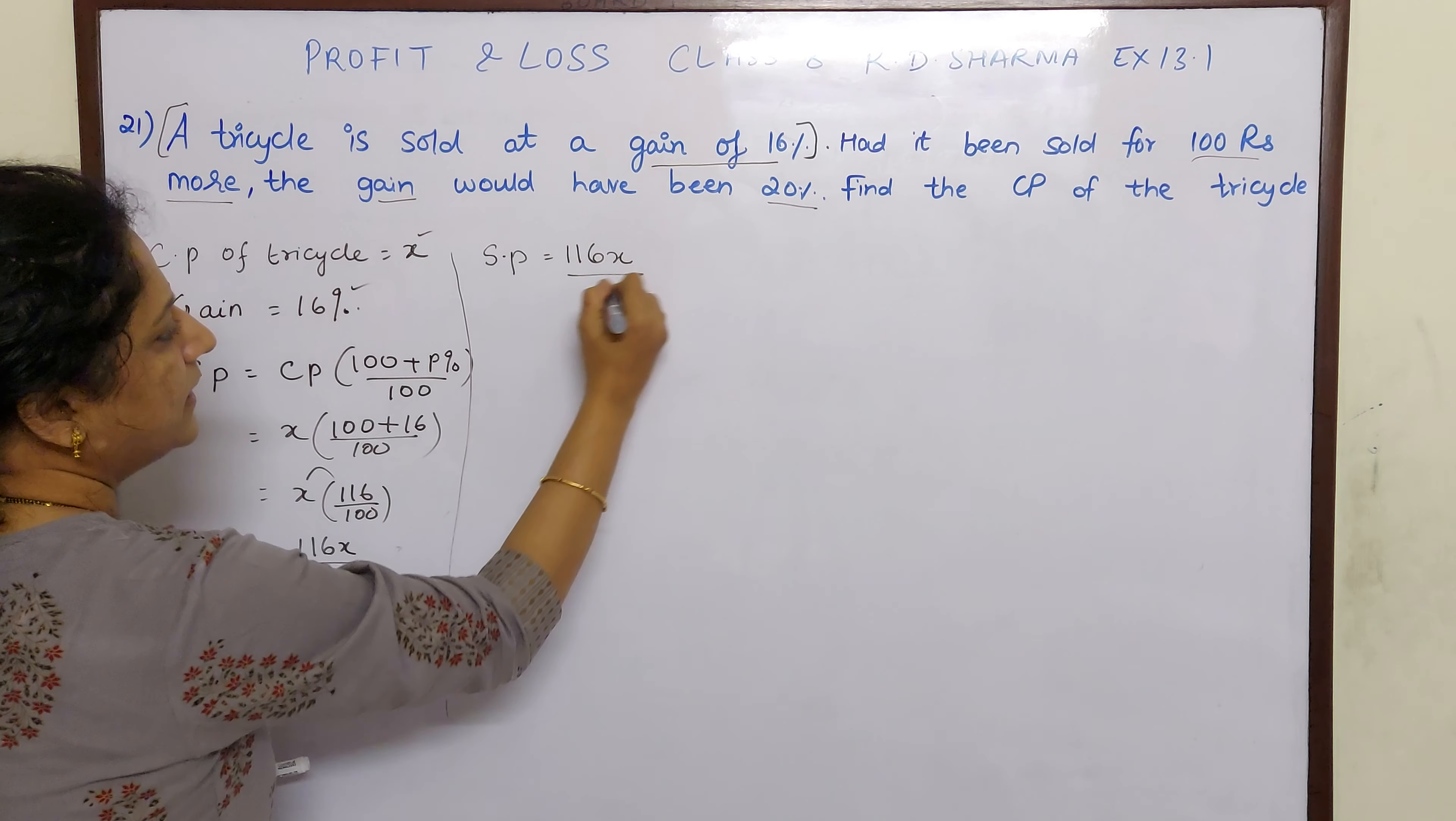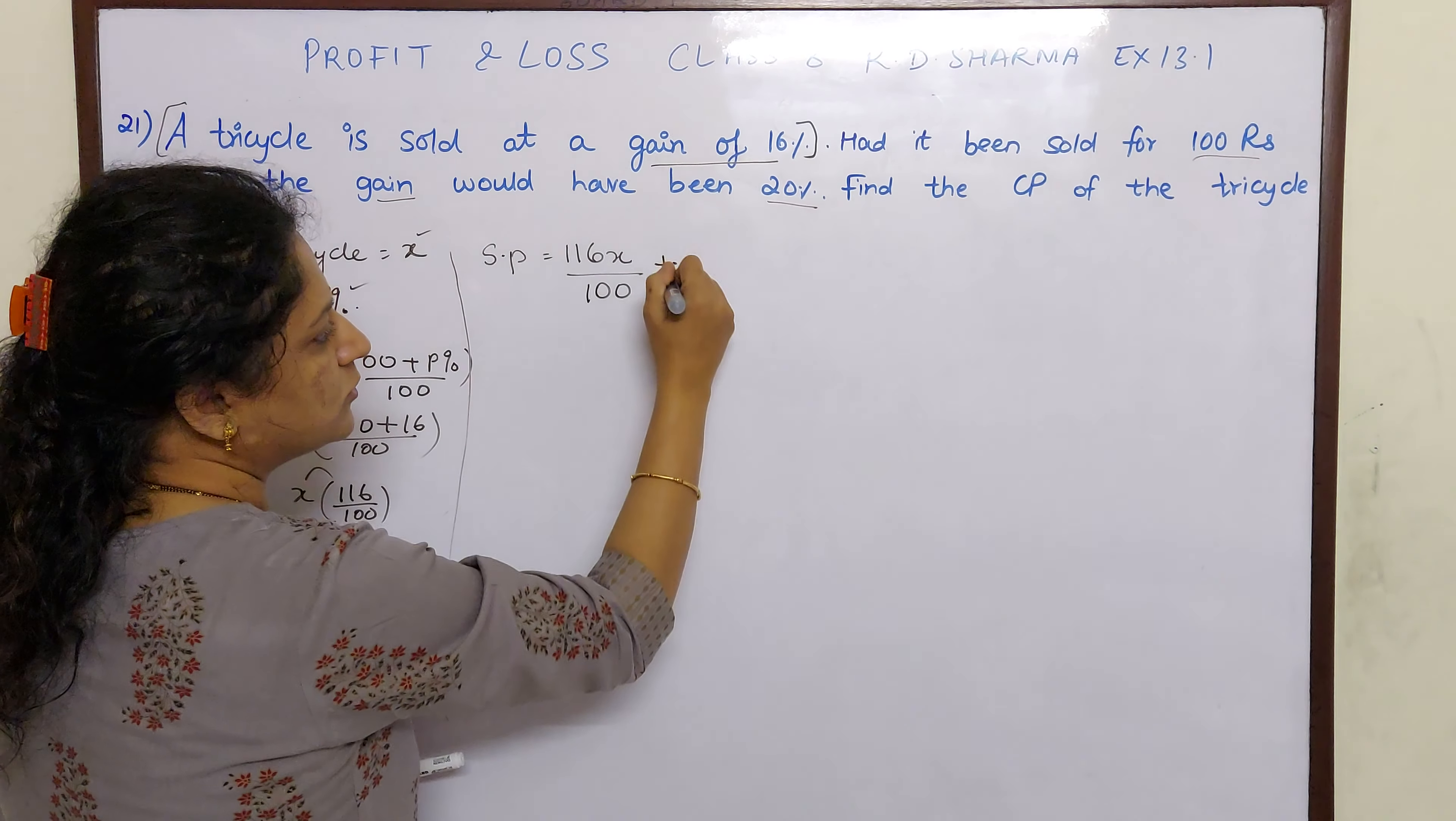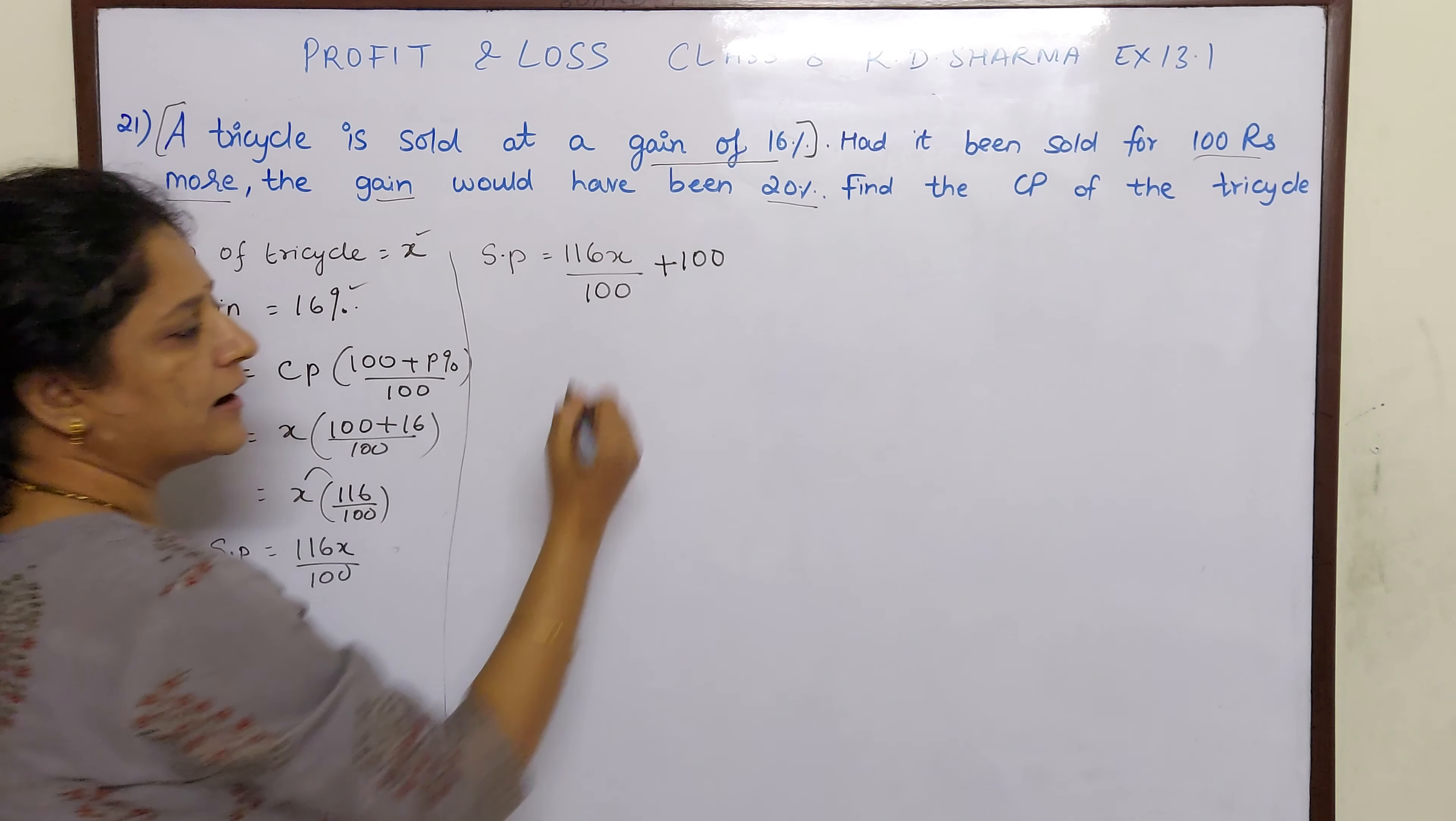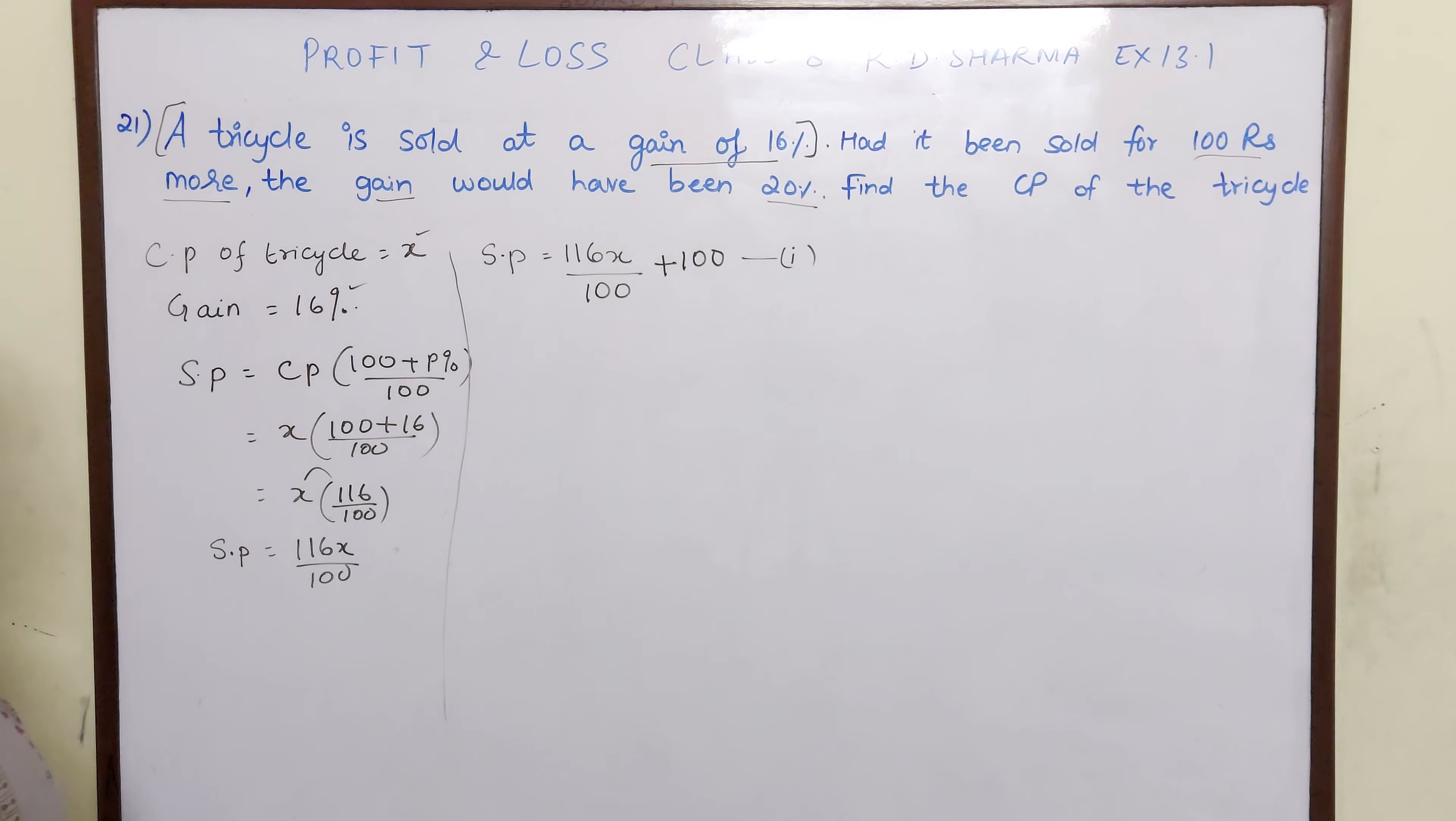116X by 100. This is our original selling price. But if I had sold this tricycle for 100 rupees more. So this is our first equation.